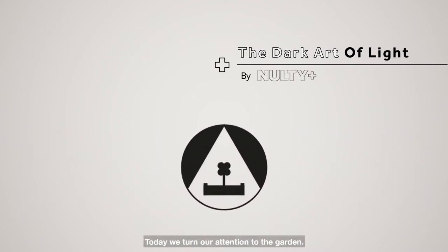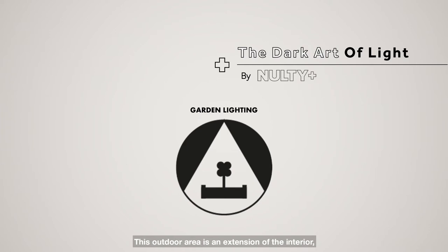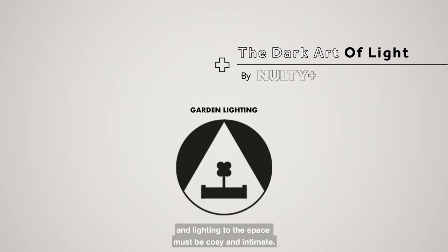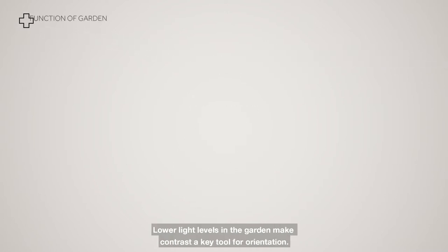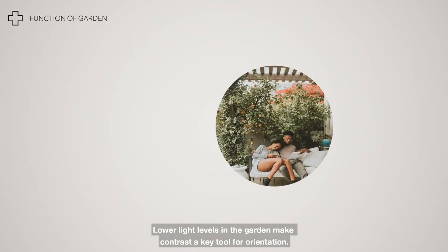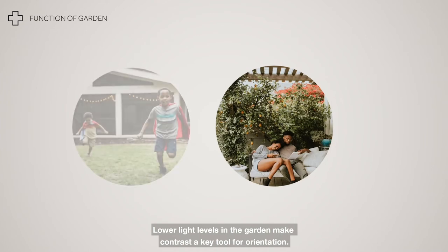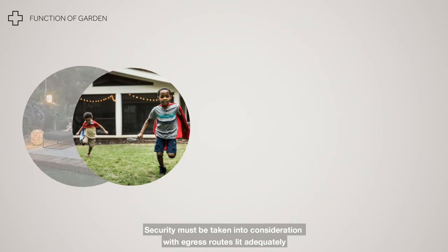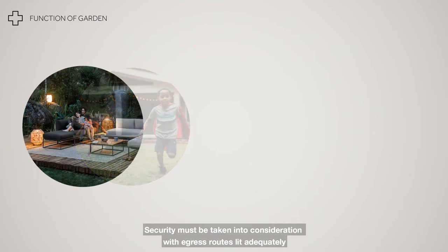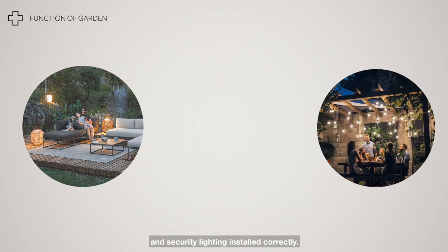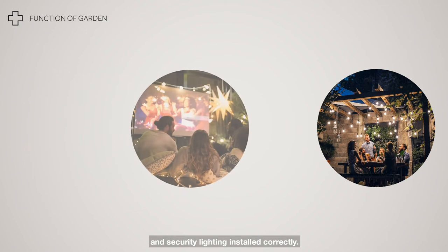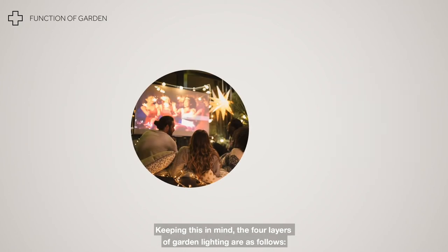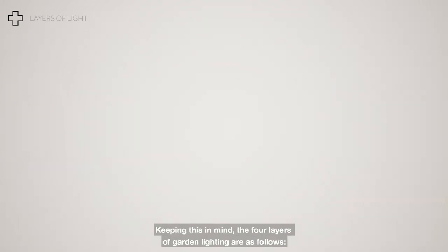Today we turn our attention to the garden. This outdoor area is an extension of the interior and lighting to the space must be cosy and intimate. Lower light levels in the garden may contrast — a key tool for orientation. Security must be taken into consideration, with egress routes lit adequately and security lighting installed correctly. Keeping this in mind, the four layers of garden lighting are as follows.